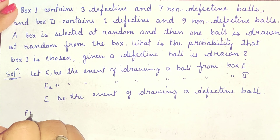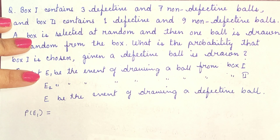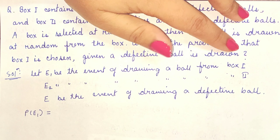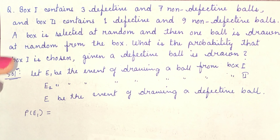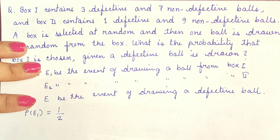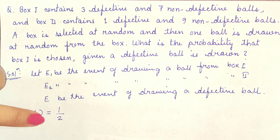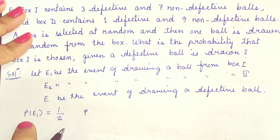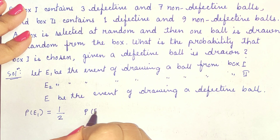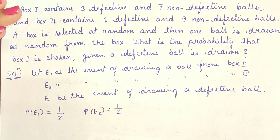Now we will find out the probability of E1. E1 and E2 are the events of drawing a ball from box 1 and box 2. Here, 2 boxes are given, so the total number of possible cases equals 2 and the cases favorable to E1 will be 1. Therefore, P(E1) = 1/2, and similarly P(E2) = 1/2.